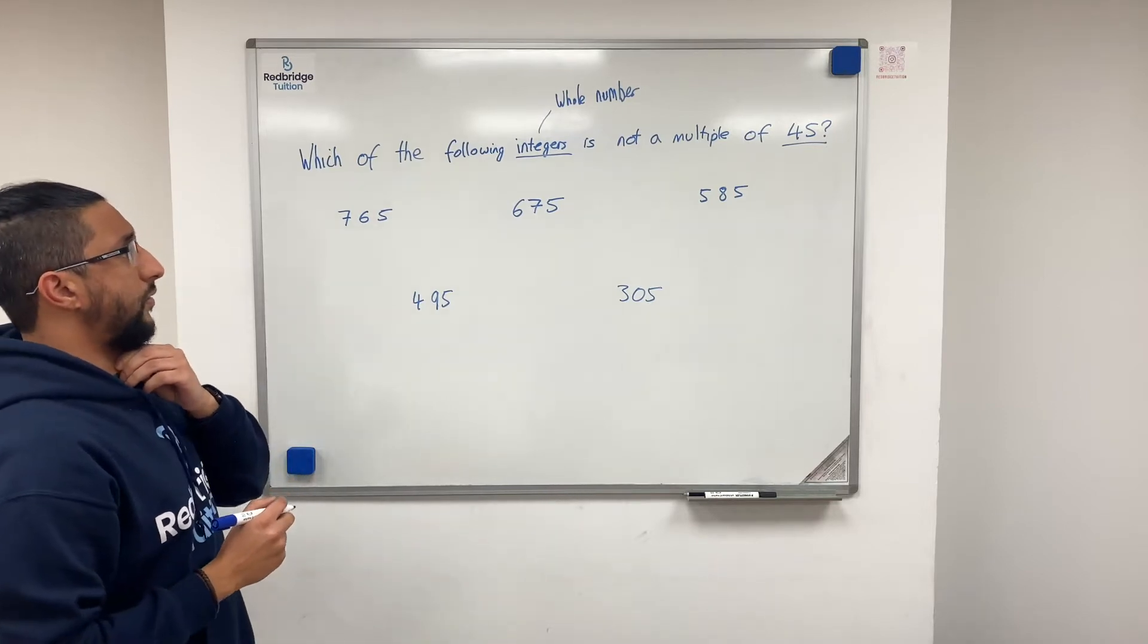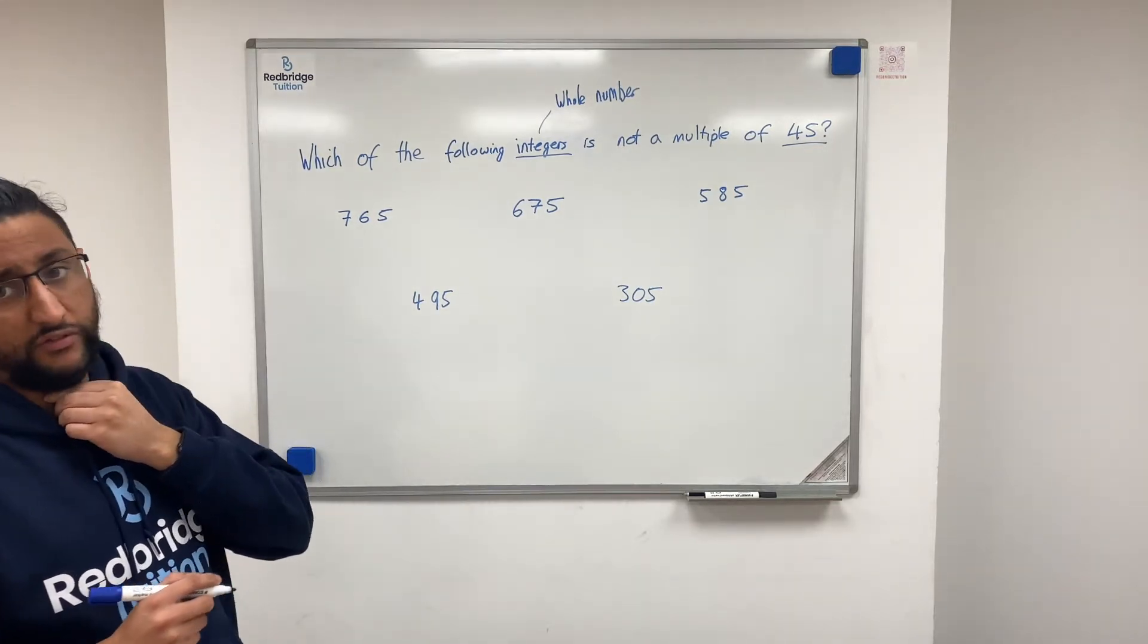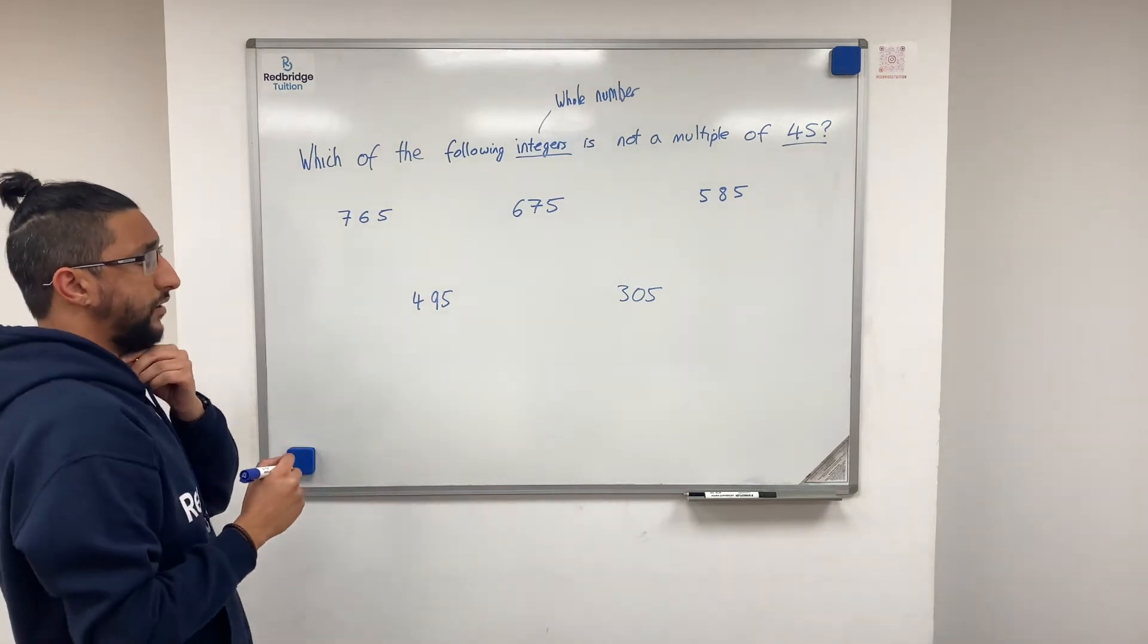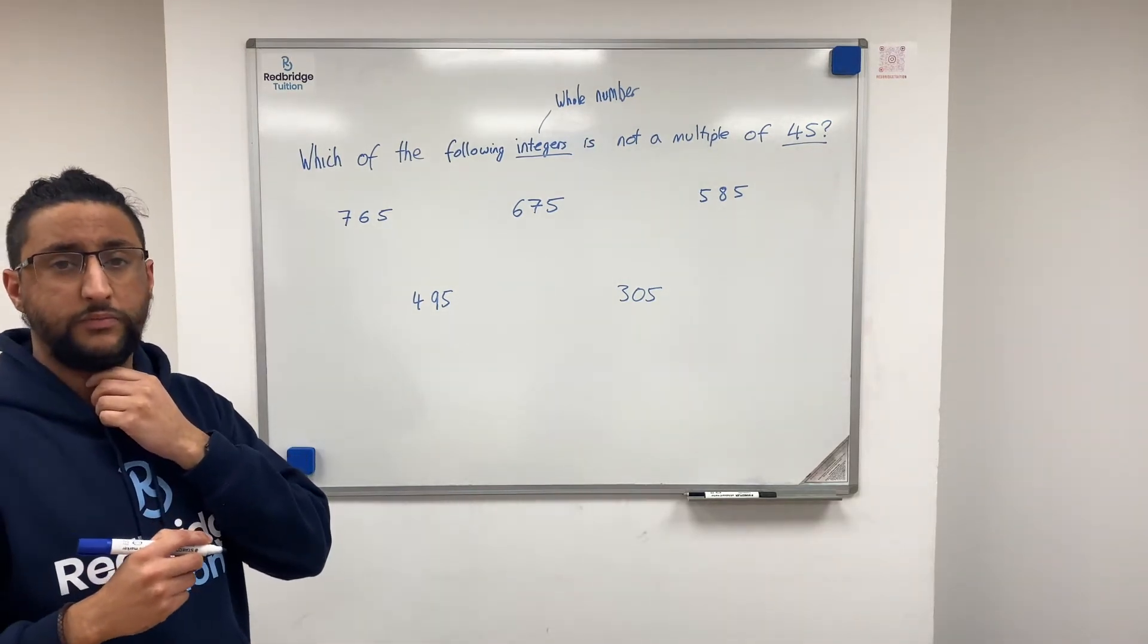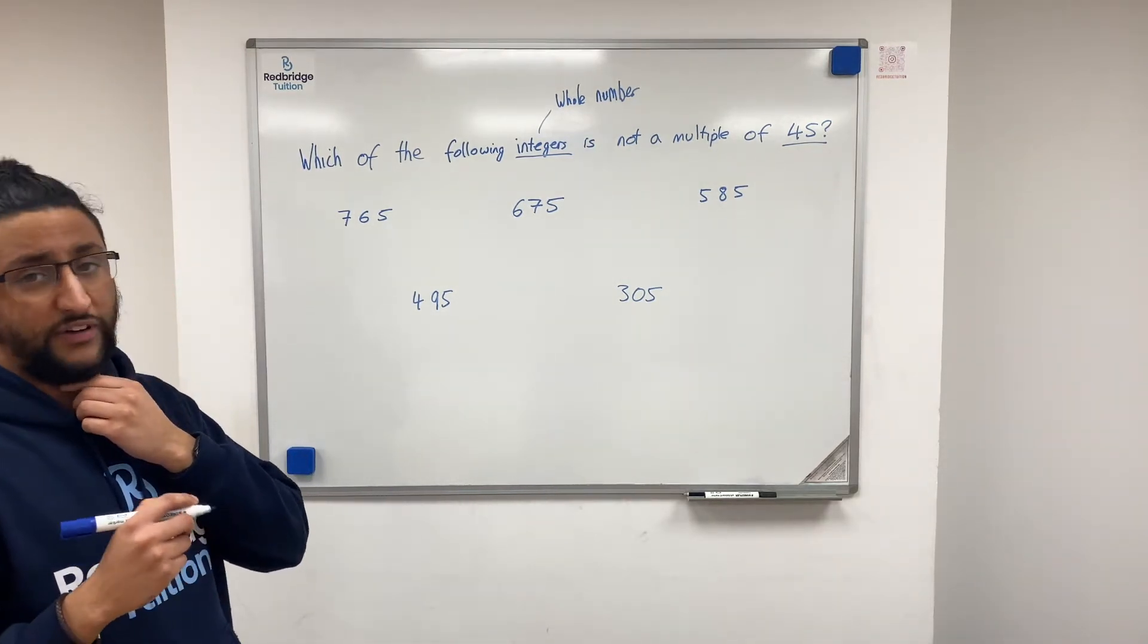So what we're going to do is divide them all by 5, and then see which ones divide by 9, because 9 and 5 are both factors of 45.